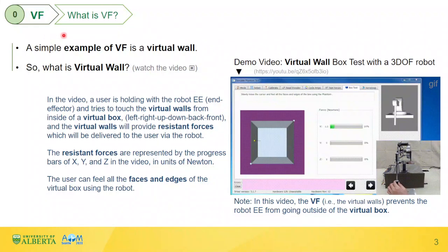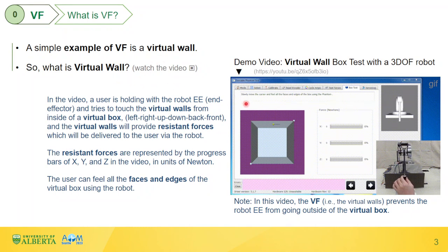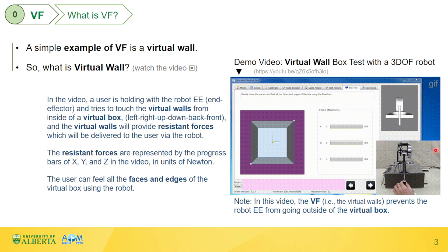First of all, what is virtual fixture, VF? A simple example of VF is a virtual wall. This demo video demonstrates a virtual wall box test using a 3DOF robot. There is a virtual box shown on the left-hand side while a user is operating a 3DOF robot on the right-hand side. The user is holding the robot end effector and tries to touch the virtual walls from inside of the virtual box — left-right, up-down, back-front.